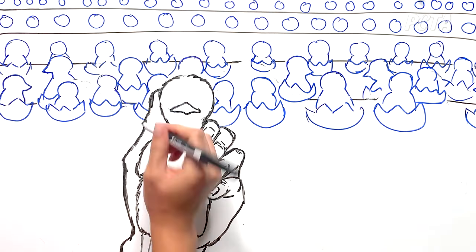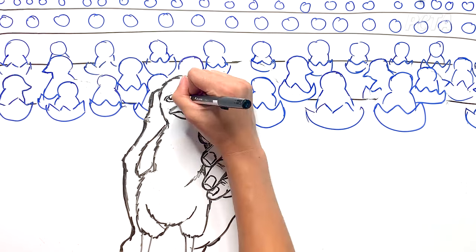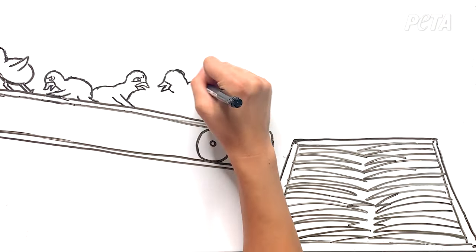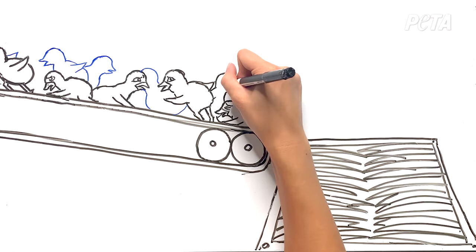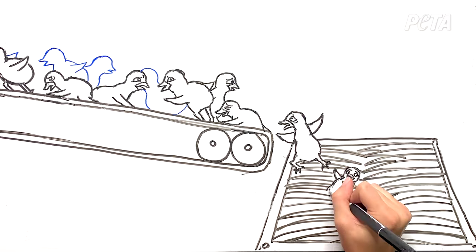Workers came and separated the males from the females. Later, I learned that the male chicks were sent to a machine that ground them up while they were still alive.